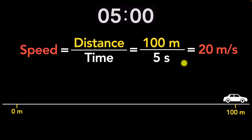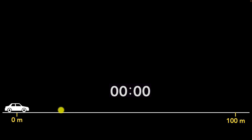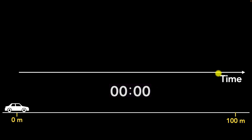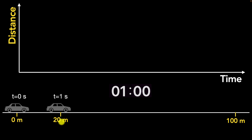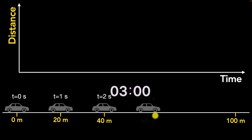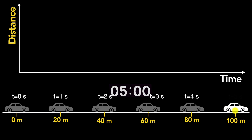Now, how do we represent this on a piece of paper? We do that by drawing a graph. First, we draw a horizontal axis and represent time on it. Then we draw the vertical axis and represent distance on it. Let's look at the distance traveled at different time intervals using one-second intervals. When time is zero, distance is zero. After one second, the car travels 20 meters. After two seconds, a total of 40 meters. After three seconds, 60 meters. After four seconds, 80 meters. And after five seconds, a total of 100 meters.